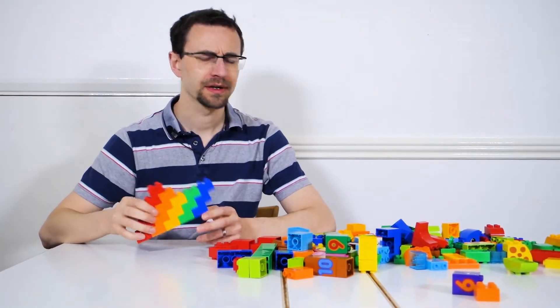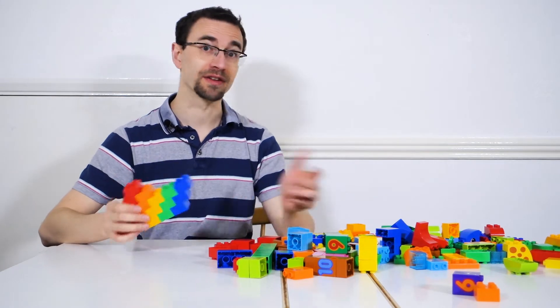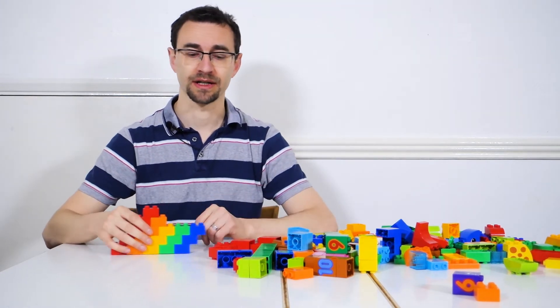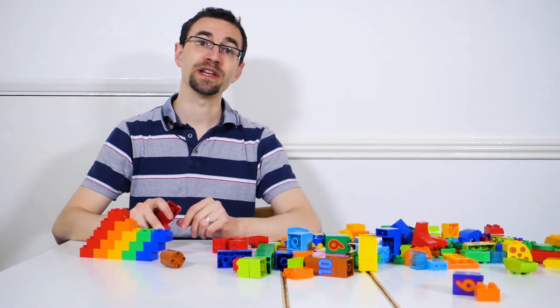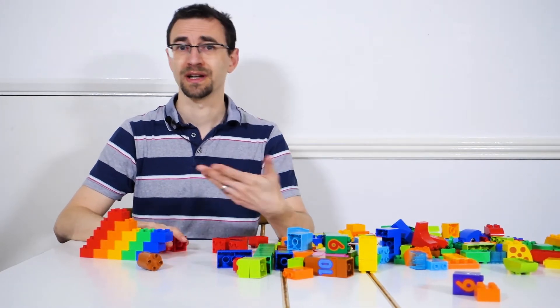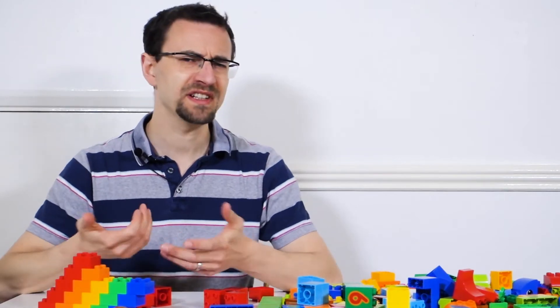I'm trying to build a rainbow but I'm not sure I've got enough bricks of each color. To check I could go through, select all the red bricks and count how many of them there are and repeat this with the orange, yellow and so on. But this is tedious.